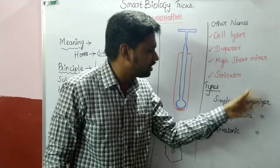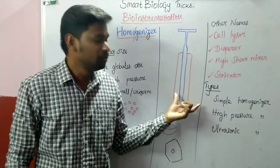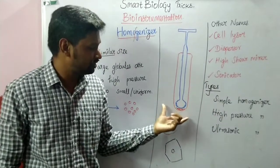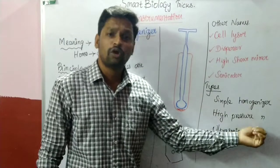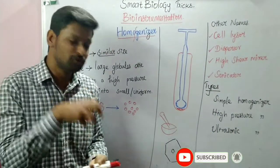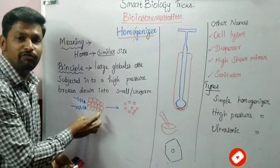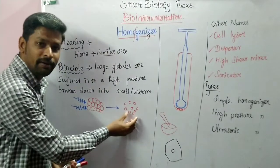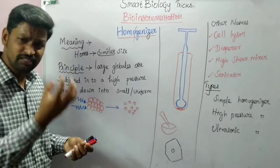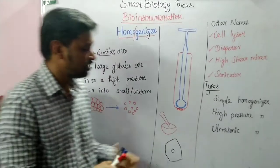A simple homogenizer does not use any electricity at all. A high pressure homogenizer is also available. With the help of high pressure, large biomolecules are broken down into simpler and uniform ones. For achieving more uniform cell sizes, we use a high pressure homogenizer.